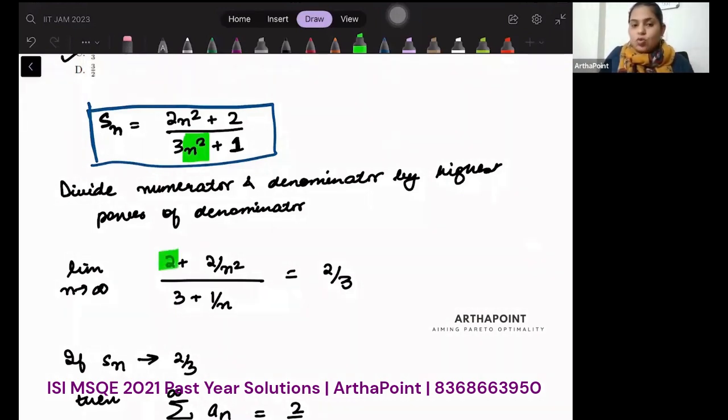So I will get 2 plus 2 by n squared, and in the denominator I will get 3 plus 1 by n squared. So 2 plus 2 by n squared upon 3 plus 1 by n squared. And now I will tend n to infinity.